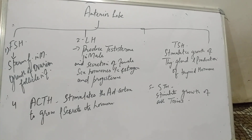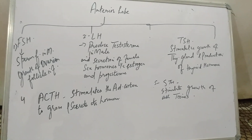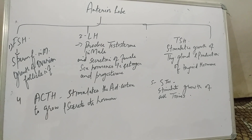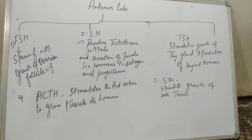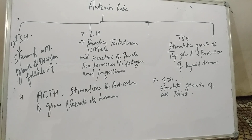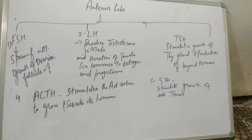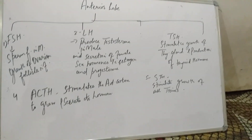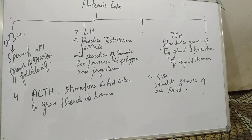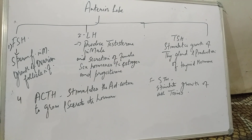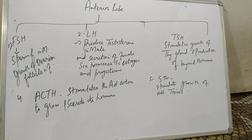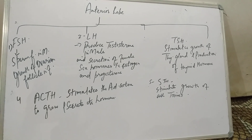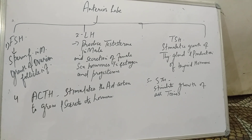Now discussing the anterior lobe hormones in detail. The first hormone is FSH (follicle stimulating hormone) — it produces sperm in males and growth of ovarian follicles in females. The second hormone is LH (luteinizing hormone) — it produces testosterone in males and secretion of female sex hormones estrogen and progesterone in females.